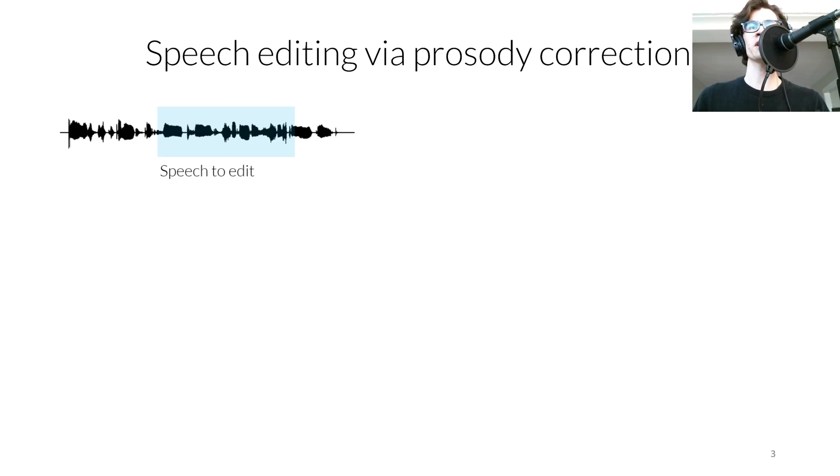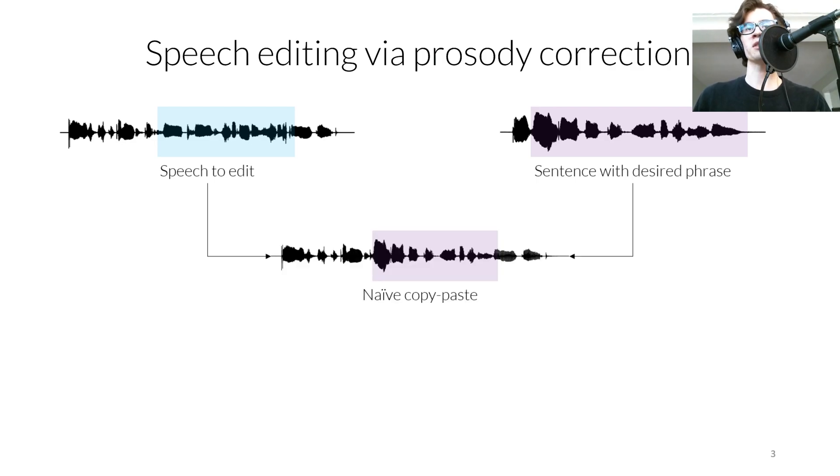First, we find a recording of this speaker saying the phrase we want. Here we'll use the phrase wonder about that rabbit she saw from the following speech, highlighted in purple. I wonder about that rabbit she saw. We replace the region in blue with the region in purple.